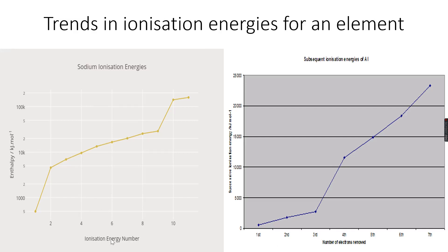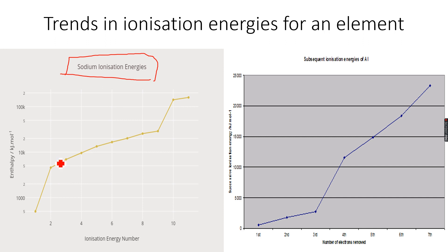Now, trends in ionization energies for an element — this is a very important topic. Look at the first graph, which is sodium ionization energies. The x-axis is number of electrons removed, and the y-axis is the energy required to remove those electrons. The conventional electronic configuration of sodium, which has 11 electrons in total, is 2-8-1.